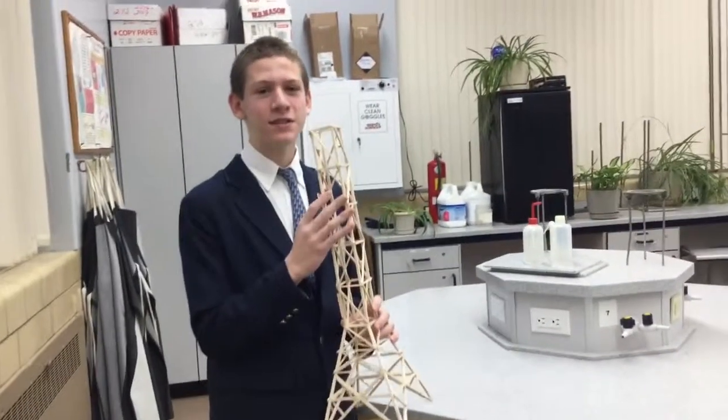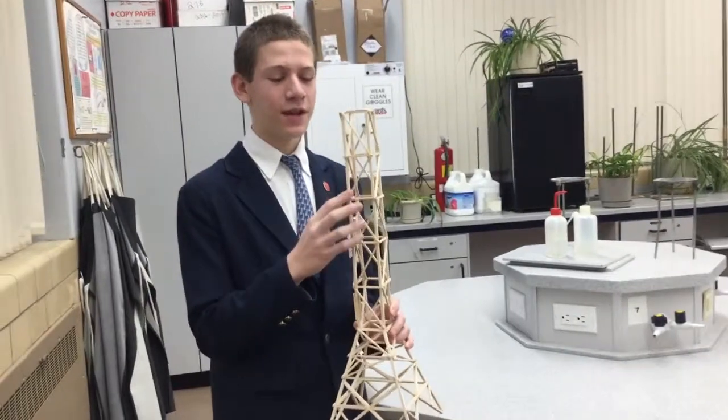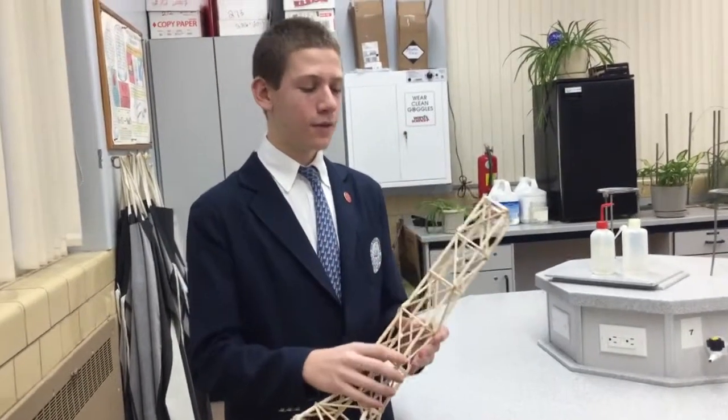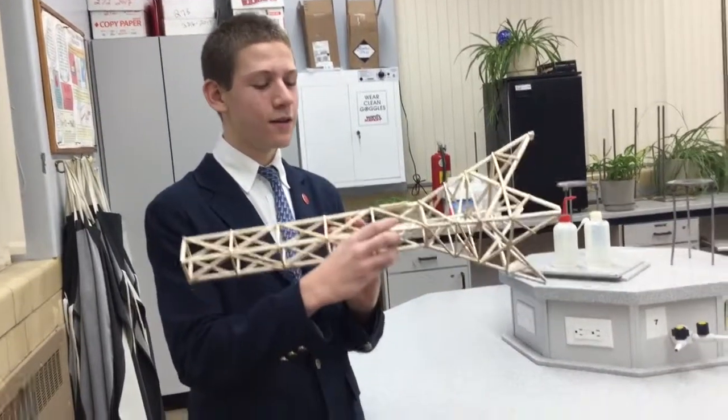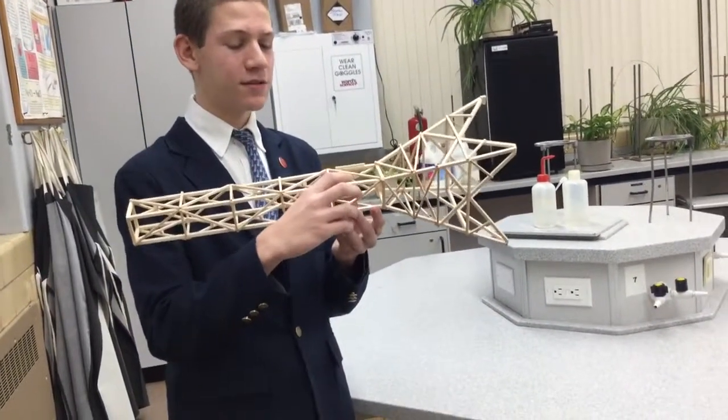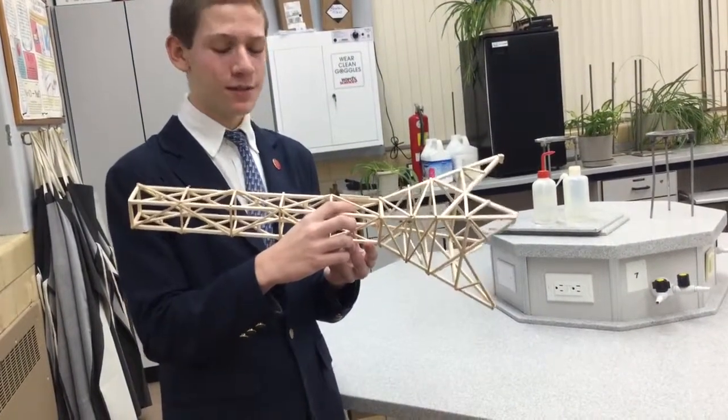We also used diagonal pieces of wood to prevent twisting or swaying of the tower. An important feature of this tower is these spacer pieces here. Basically, they make it so there's less of a gap between the wood so the glue gets a better bond.